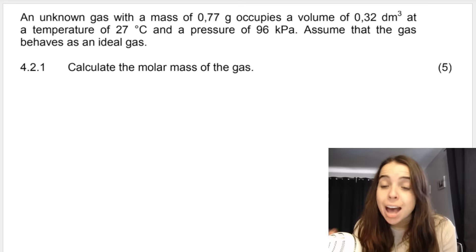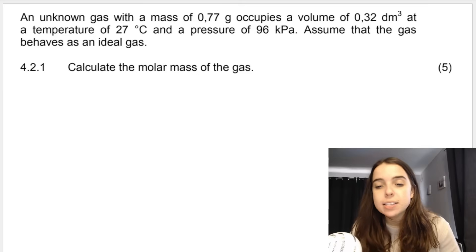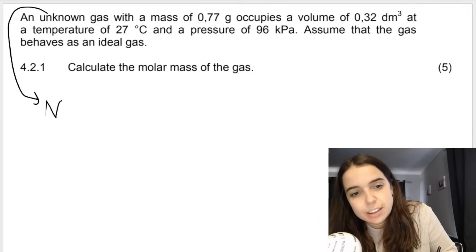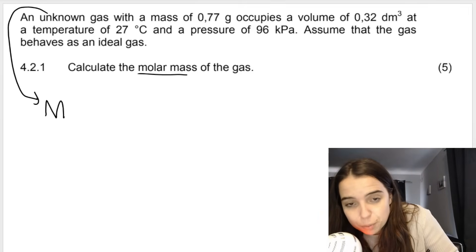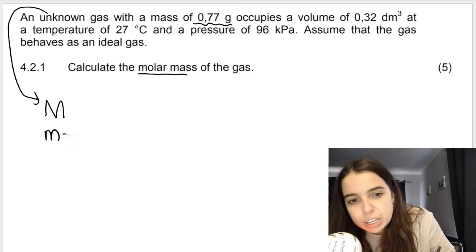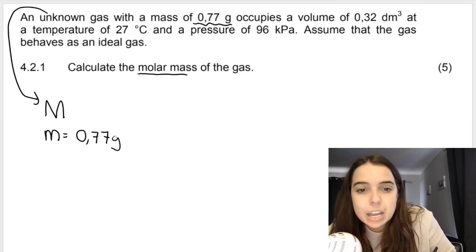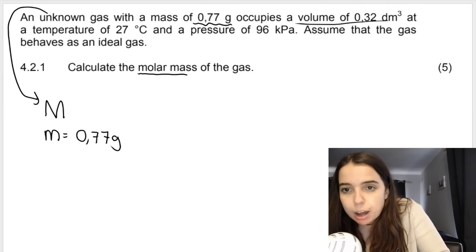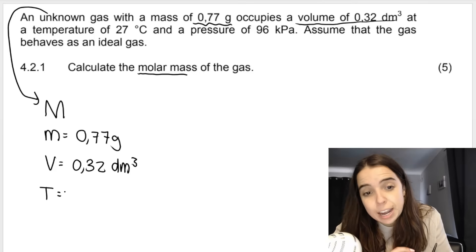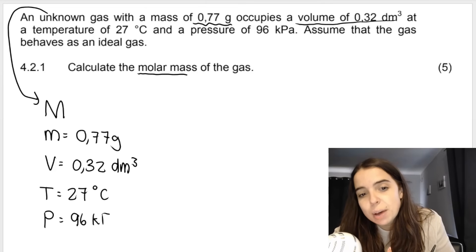In this question, they're giving me an unknown gas. We don't know what the gas is. And what that implies is that we don't know what the molar mass of the gas is. And the question is actually calculate the molar mass. So unknown gas, they give me the mass in grams. So we know little m is 0.77 grams. They give me the volume that it occupies, but they give it to me in cubic decimeters. 0.32 cubic decimeters. They give me the temperature. But again, keep in mind the units, it's in degrees Celsius.